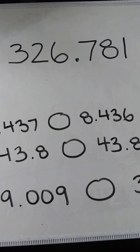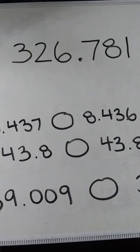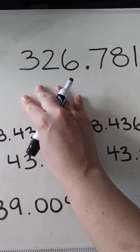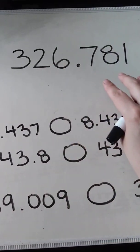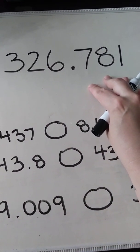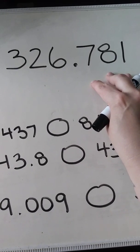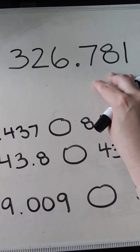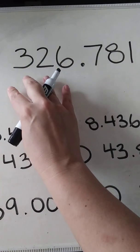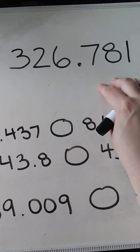Basically, decimals are directly related with fractions. On the left side of the decimal you'll have your whole numbers, and on the right side you'll have the parts, or the fractions, or the bit that's left over. So if we were talking fractions or money, you'd have your dollars over here and your cents over here.